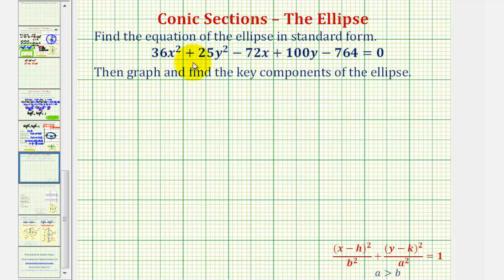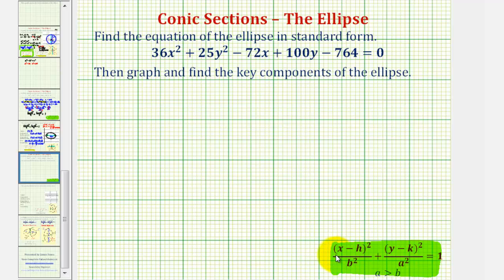In this example, we're given the general equation of an ellipse and we're asked to write the equation in standard form, as well as graph and find the key components of the ellipse. The standard equation of an ellipse is given here. So in order to obtain the quantity x minus h squared and the quantity y minus k squared, we'll have to form perfect square trinomials. For the first step, let's go ahead and write the x terms and y terms next to each other.